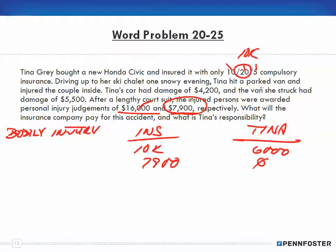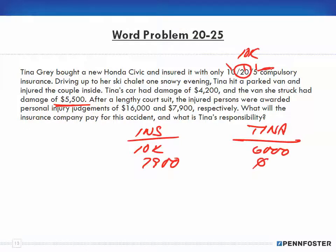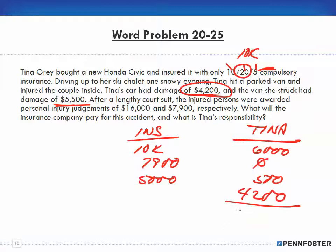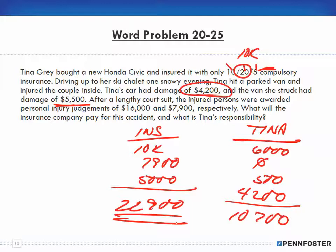For the automobile damage: the other person's car had $5,500 in damage. The insurance company pays $5,000 of it, and Tina pays the additional $500 out of pocket. Her own car was damaged for $4,200 — because she didn't have collision, she has to pay that $4,200 herself. When you add up everything for Tina, it comes out to $10,700. When you add everything up for the insurance company, it comes out to $22,900.